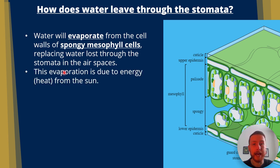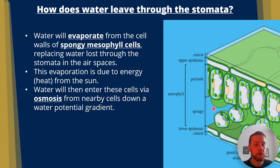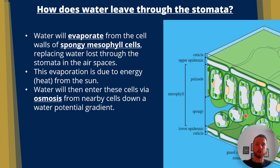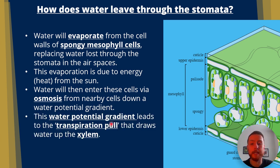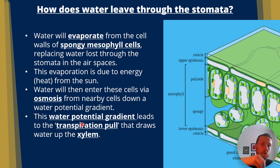This evaporation is due to heat energy from the sun. Because these spongy mesophyll cells have lost water, water then enters these cells via osmosis from nearby cells down a water potential gradient. Water passes into them down that gradient, and this water potential gradient leads to a transpiration pull that pulls water up through the xylem in a continuous unbroken chain.